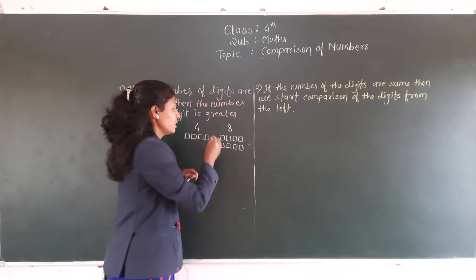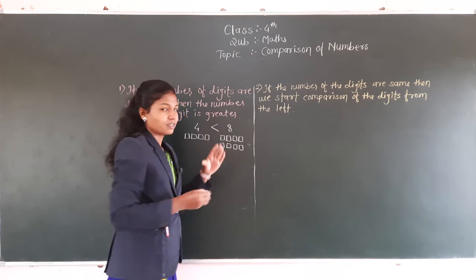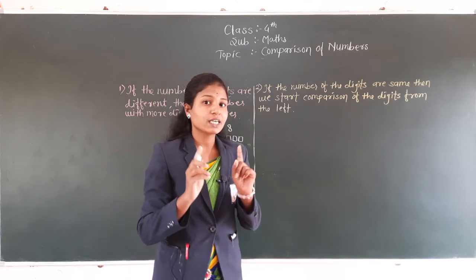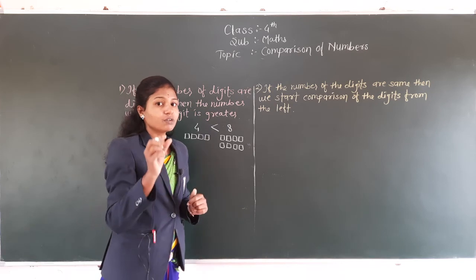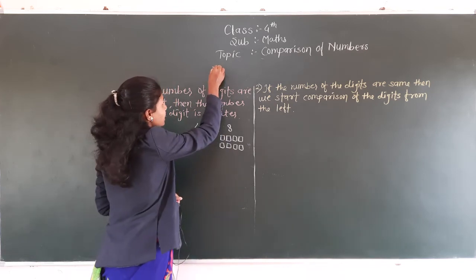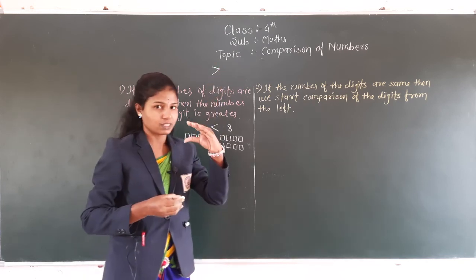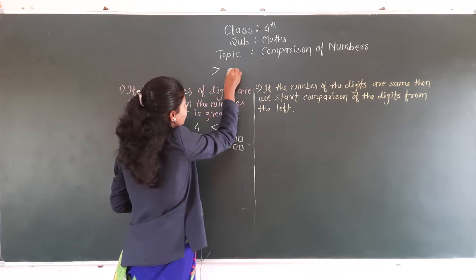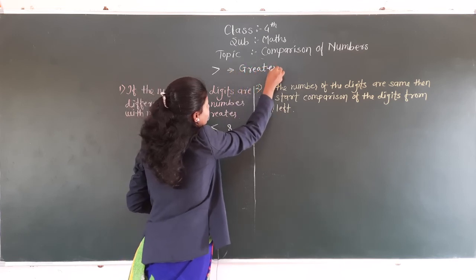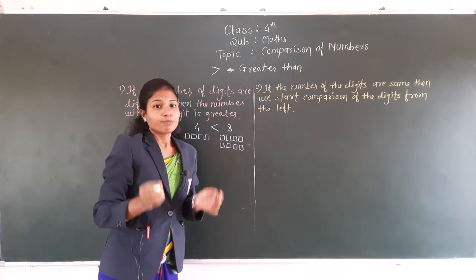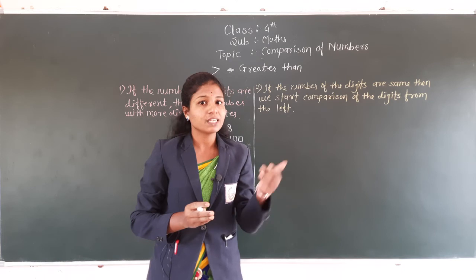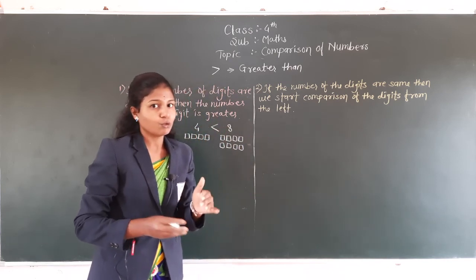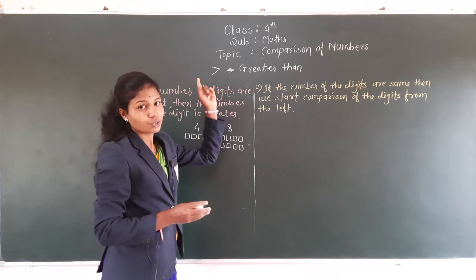तो हमें इसके लिए एक sign देना पड़ेगा. This sign is the greater than sign. तो comparison of numbers पढ़ते समय हमें सबसे पहले उसके signs पता होने चाहिए. Let's see what the signs of comparison are. The first sign is this one — इसका open mouth का sign है. यह sign हम इसको क्या कहते हैं? This sign is greater than. When we want to show any number is bigger than another number, that time we use this sign. अगर कोई number दूसरे number से बड़ा हो, यह अगर हमें दिखाना है, तो उस time हम इस sign का use करते हैं.